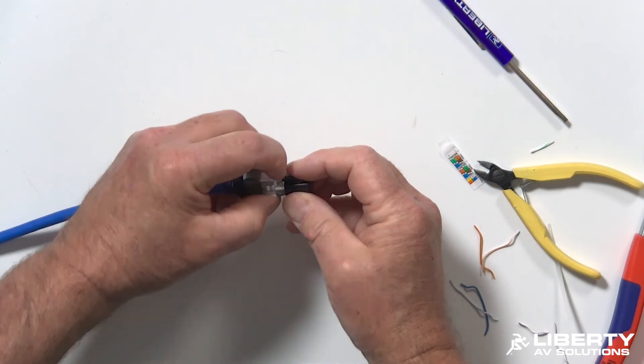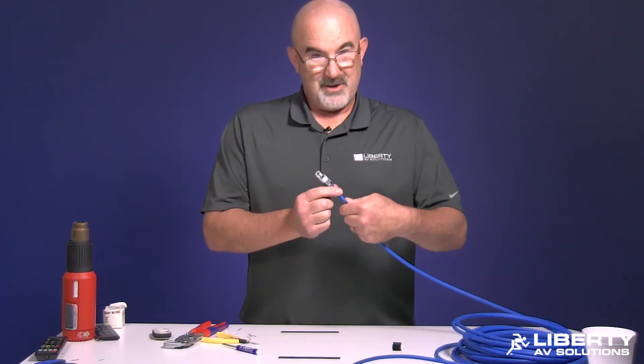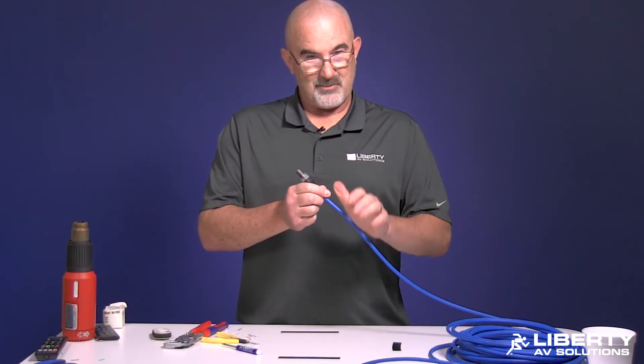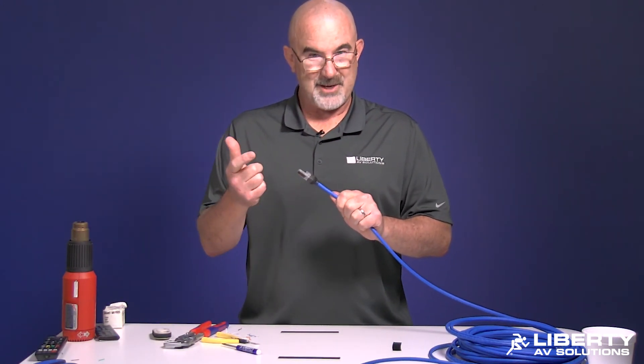This is just a dust cover on the front, so it comes off. This is a fully terminated NCS cable. Gives you all the benefits of a shielded cable, or most of the benefits of a shielded cable, with the ease of a UTP termination.